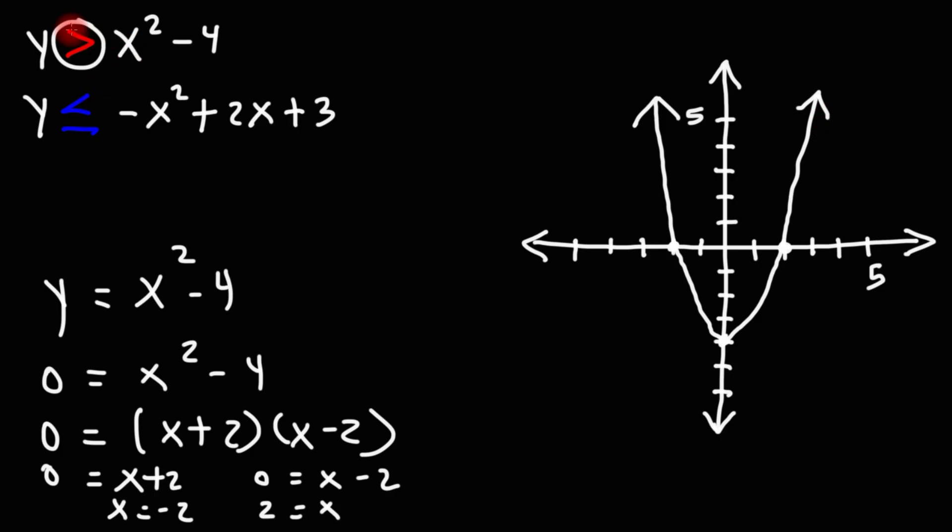Because we're dealing with inequalities, notice that y is not equal to x squared minus 4, but it's greater than. So what we need to do when graphing it is we need to use dashed lines. But let me just graph this in a different color so you can see everything clearly.